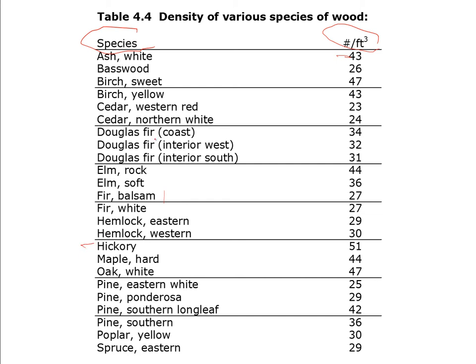Hickory is a very hard, strong wood with a density of 51 pounds per cubic foot. Water is 62.4 pounds per cubic foot, so a piece of hickory floats pretty low in the water. There are one or two species that are actually denser than water, but they are extraordinarily rare. Among structural materials, none are typically over 40 pounds per cubic foot, and typically they're more in the range of 30 to 35.